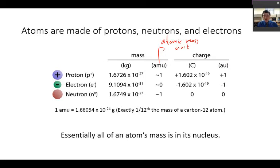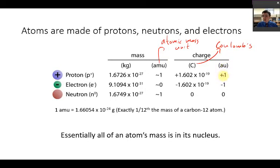The charge is based on the number of protons and the number of electrons. The C here stands for coulomb, which is the international unit for charge. In arbitrary units: a proton has one positive charge, an electron has one negative charge, and neutrons are neutral — hence their name.